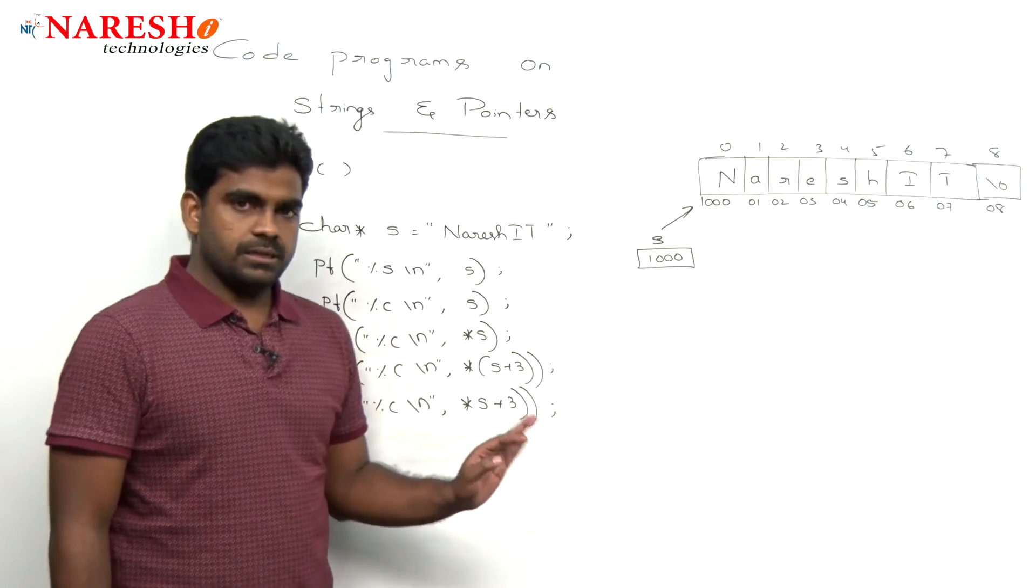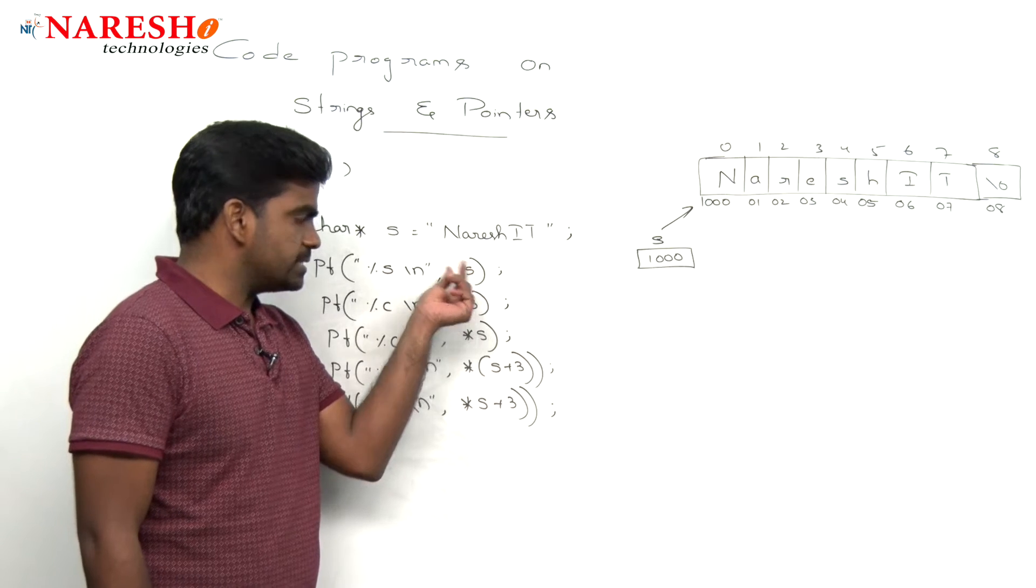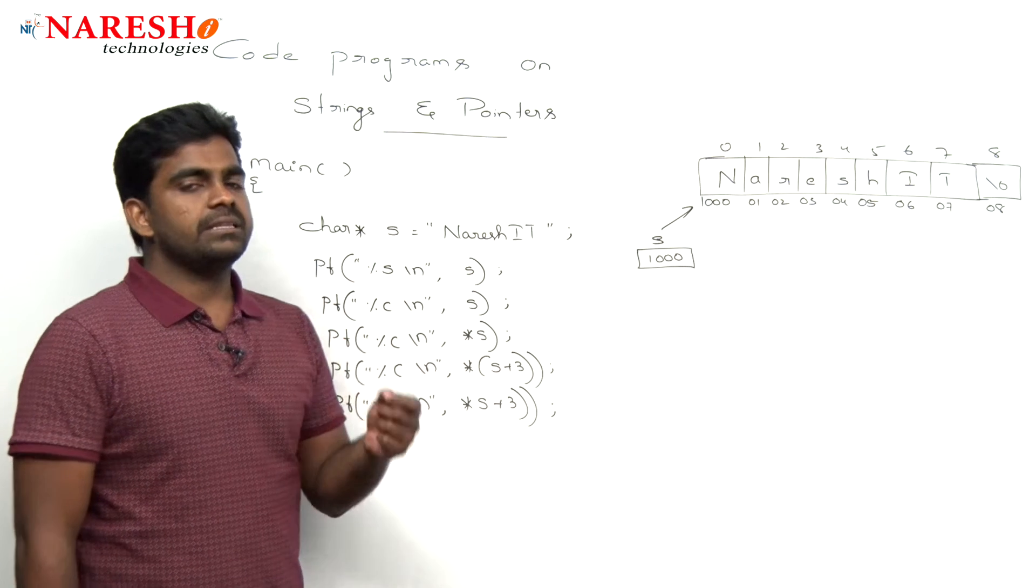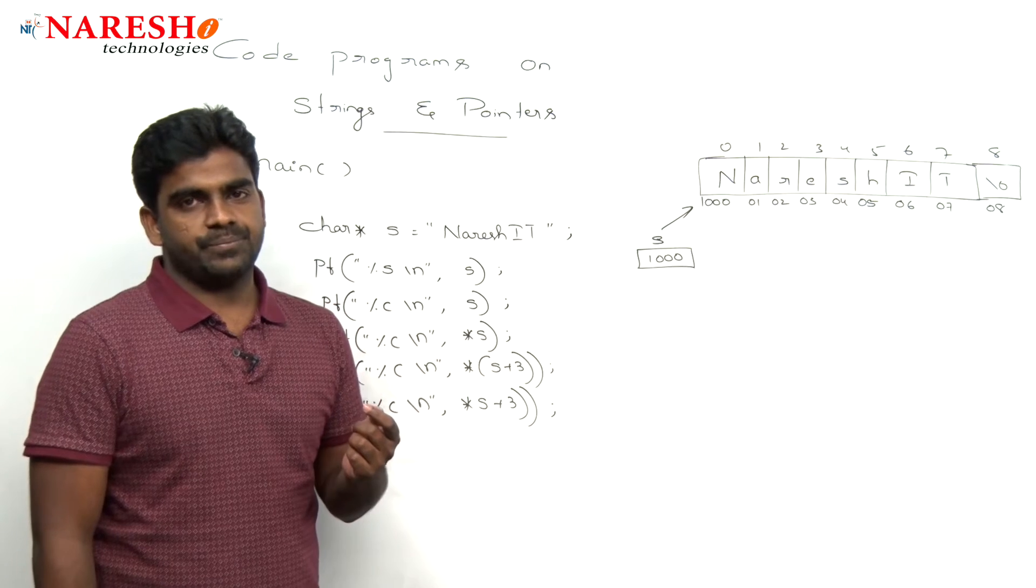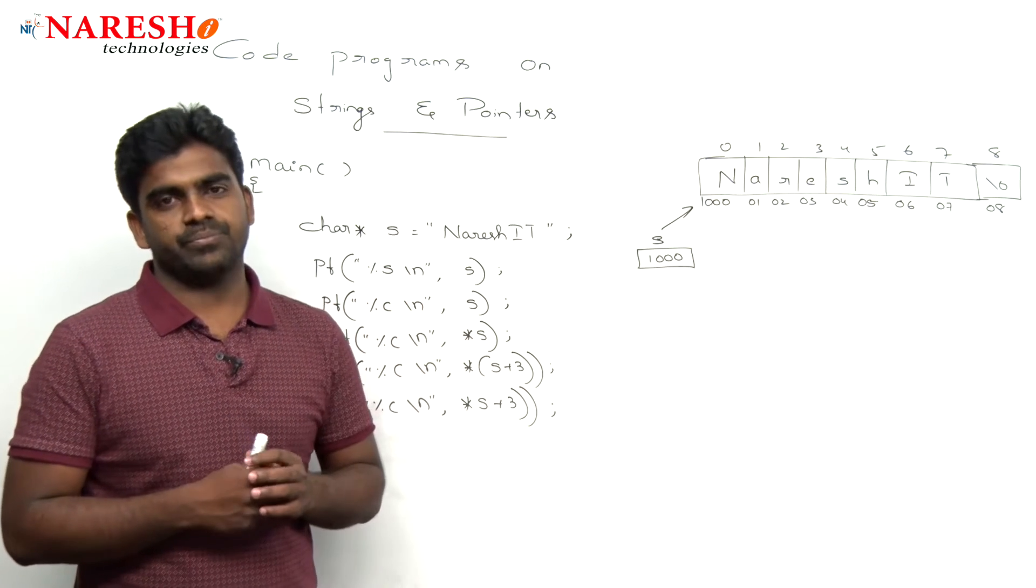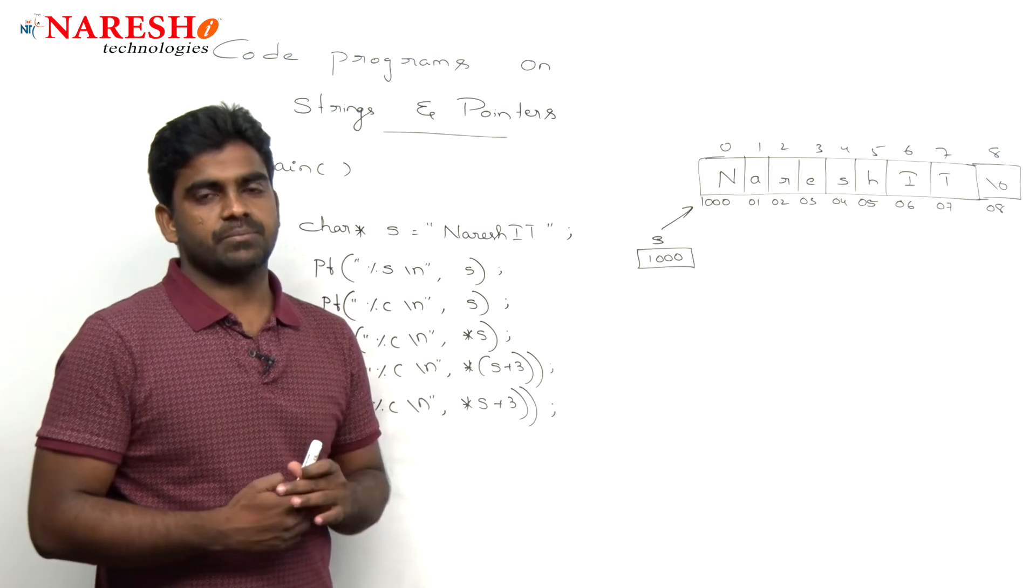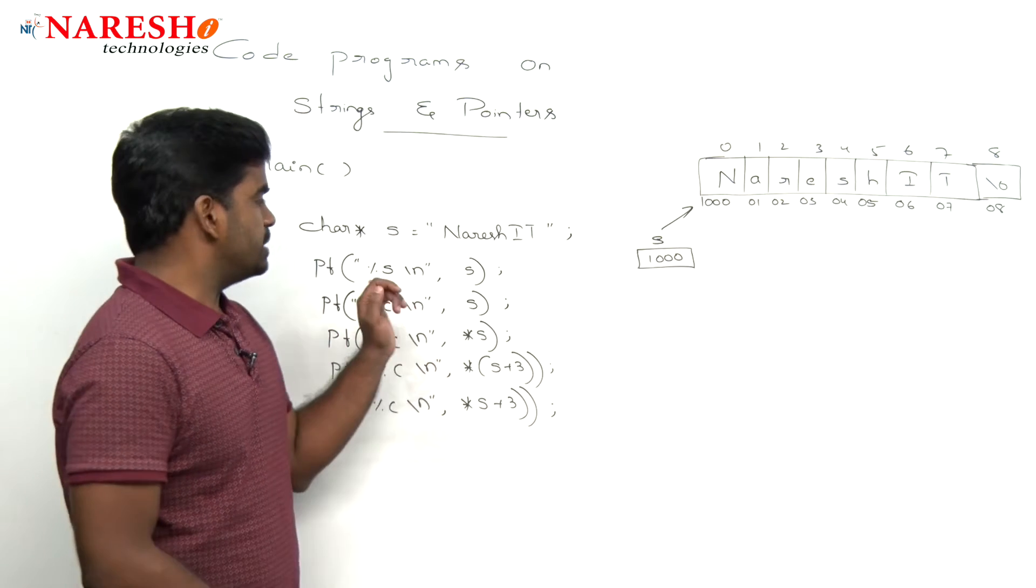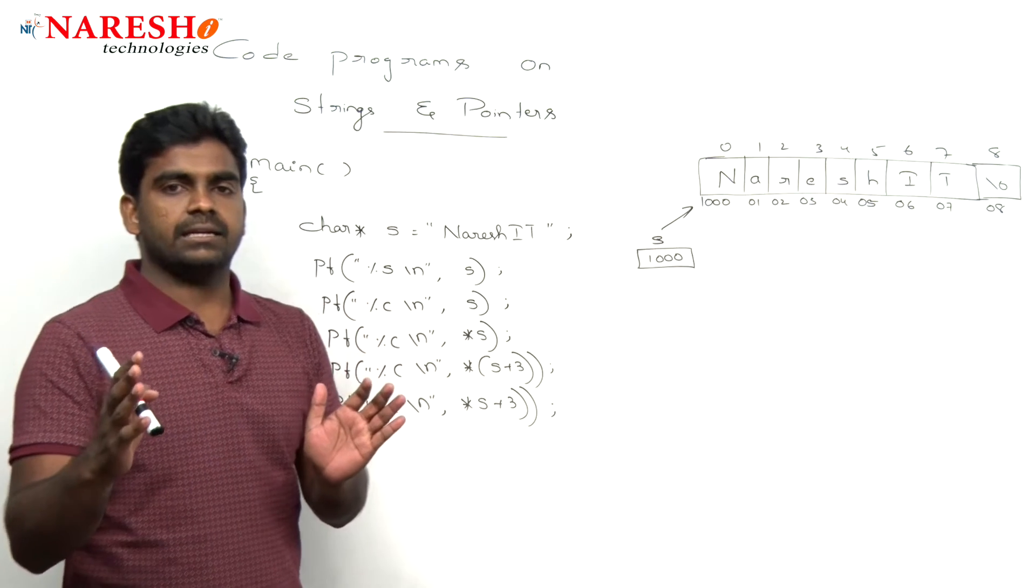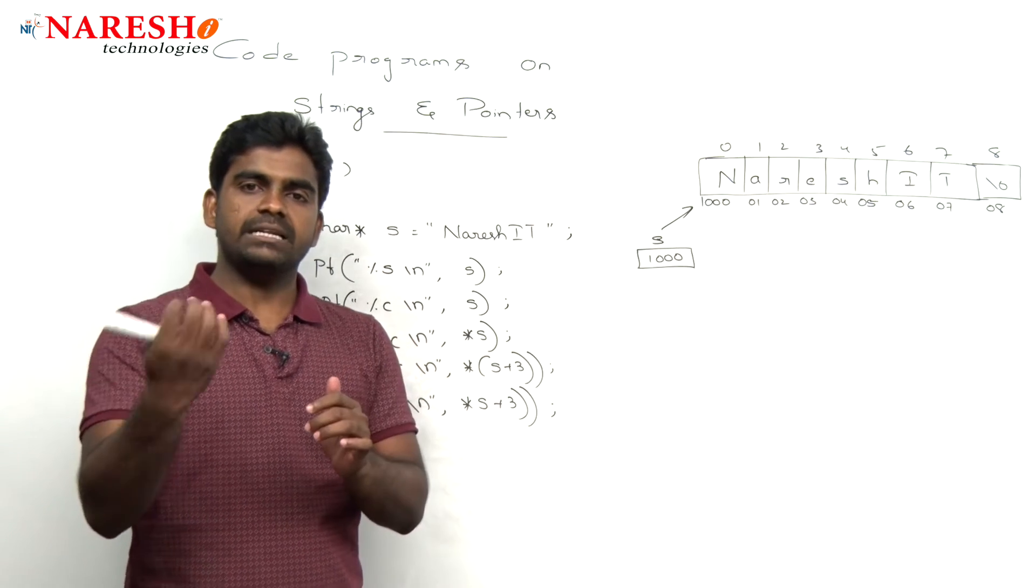So we need to evaluate these things. First, they mentioned only S. And here, what format specifier they have given is very important. Percentage S means representing the string. So whenever you specify the base address, from the base address up to the null character, all the characters will be displayed.